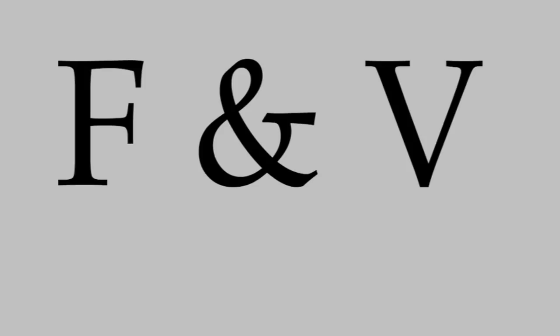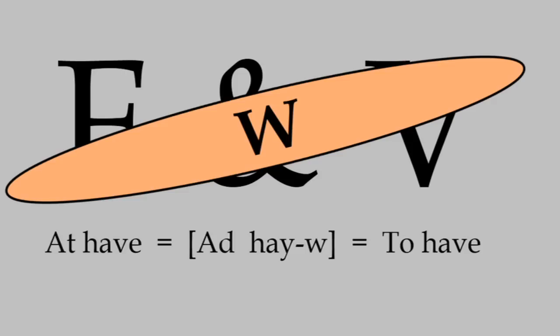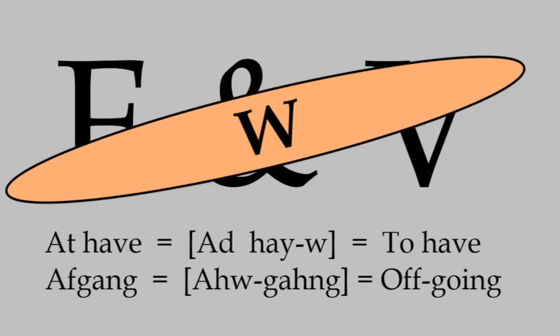Next up is F and V. Most of the time these are pronounced just as you'd expect, but sometimes they take a W sound instead. Two important examples are at have, which means to have, and most words starting with AF, like afgang, which means departure.